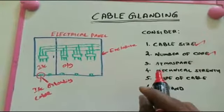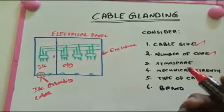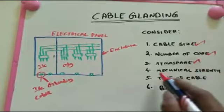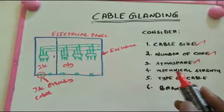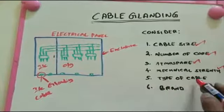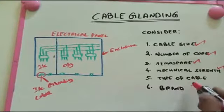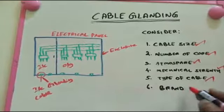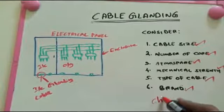After that, we consider the atmosphere — that means the environment. The environment is very important because of moisture, heat, and rising temperature. After that, we consider mechanical strength — the cable strength, how tight the cable is held, and the tightness of the cable finish — these things control the mechanical strength.